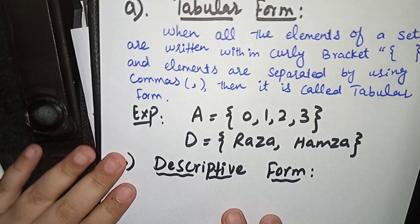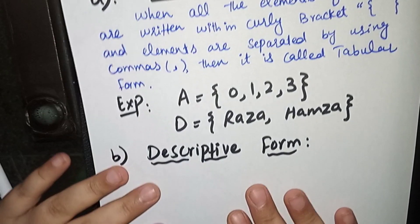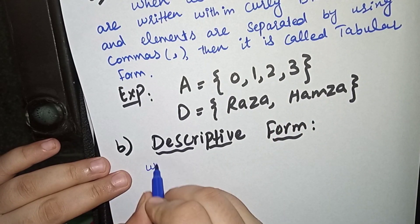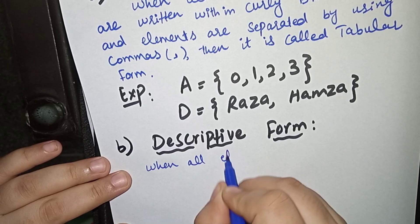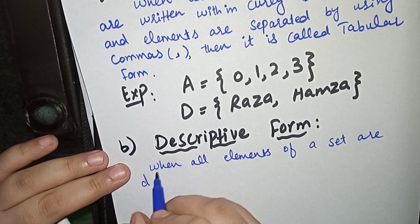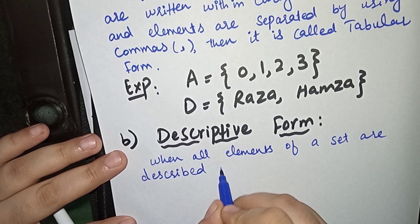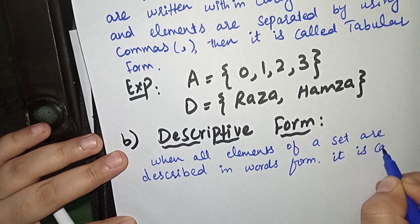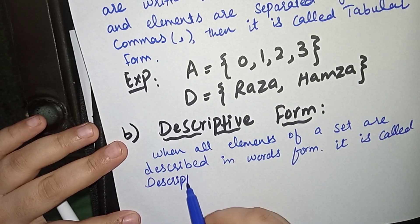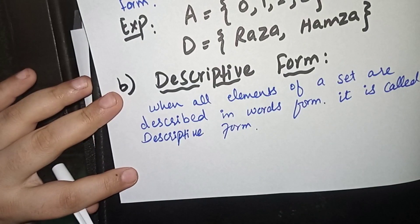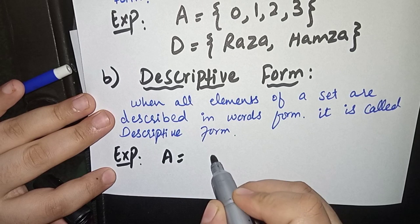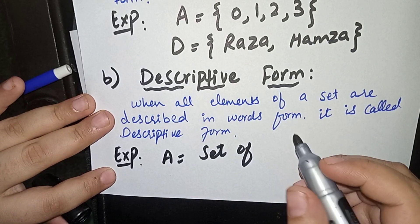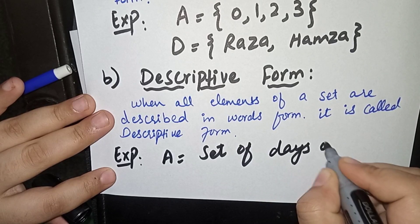Now let's move to the second form, which is descriptive form. The name 'descriptive' is derived from the word 'describe.' In descriptive form, all elements of a set are described in word form. It is called descriptive form because we are describing the elements using words. I will give you examples to make this more clear.